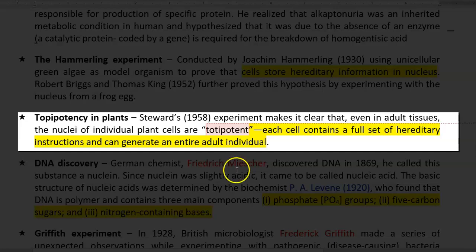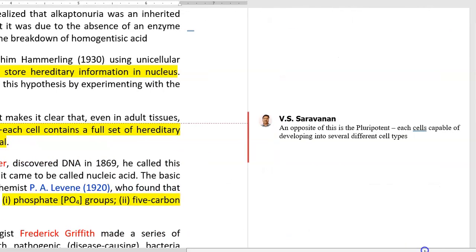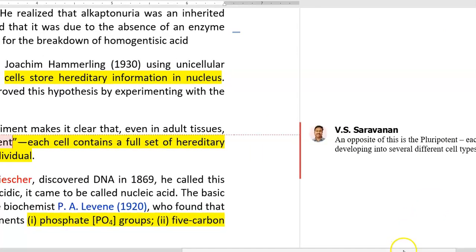This totipotency phenomenon was proved by Stewart in the year 1958. He clearly showed that even in adult tissue, the nuclei of individual plants could serve as totipotency centers — that is, the nucleus was found to have all the hereditary information that can make the whole plant to get regenerated.